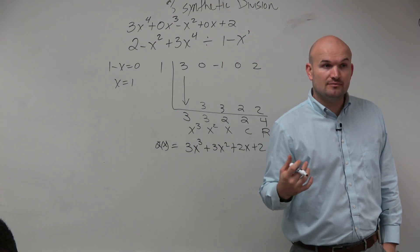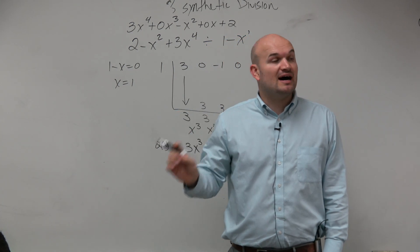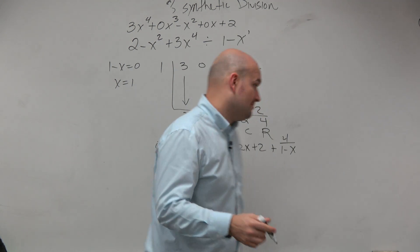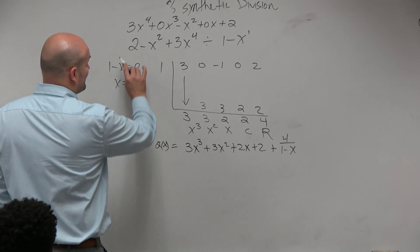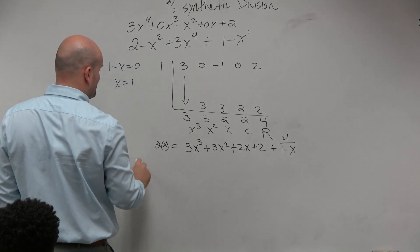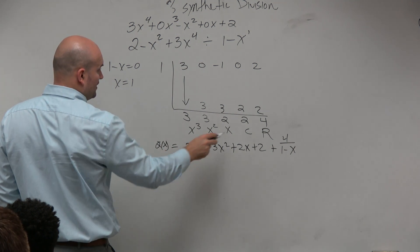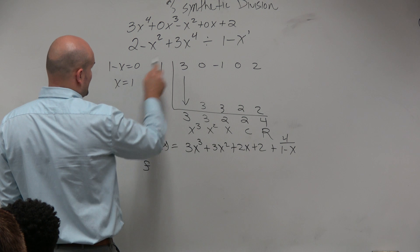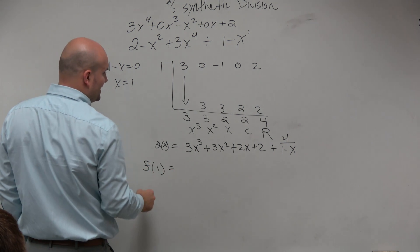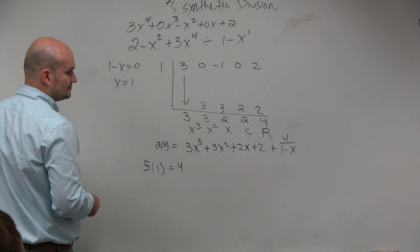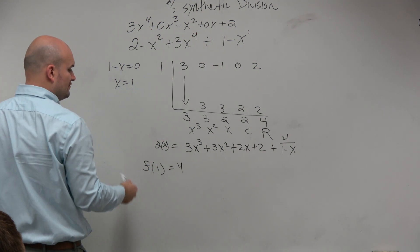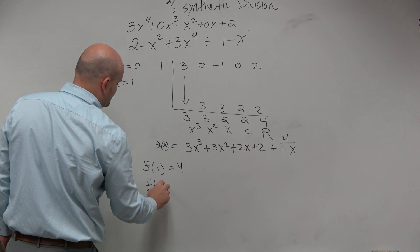However, I didn't just say divide — I said divide and check your answer using the remainder theorem. So what that means is if I take this original function, let's call it f(x), and plug in f of 1 — what was my zero — I should get 4. I should get the remainder. If I plug this 1 into my original function, I should get 4. Let's go ahead and check that.